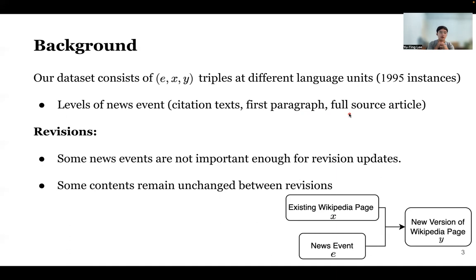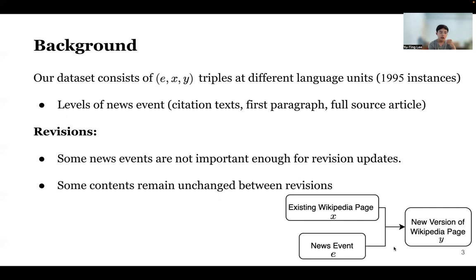This example is one of the Wikipedia current events portal. The summary is written by a human, and we also have an existing Wikipedia page. By concatenating with the news event, we have the new version of the Wikipedia page represented as Y. We have multiple pairs of the E, S, Y two-channel model. We see the revisions between pages are affected by the news event happening. The first paragraph, the full contents, and the summary level of the news page are also considered as a trigger news event.